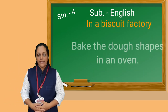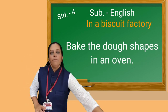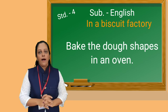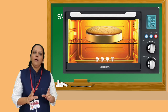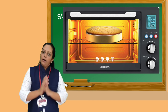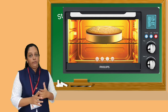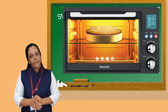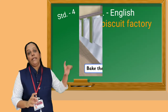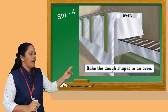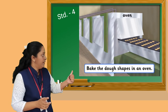Now let's move to the next step. Next step is: Bake the dough shapes in an oven. Here we see a new word — bake. Bake means to cook by dry heat, especially in an oven. Oven means a box-like equipment used for roasting and heating food items. In an oven, we have to set the time. These ovens are used at home — this is a small oven — but in factories, we see big ovens. After cutting the biscuits into biscuit shapes, they are sent to an oven for baking.